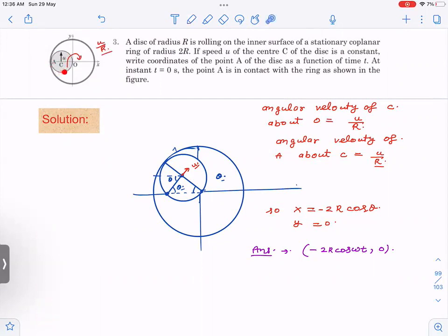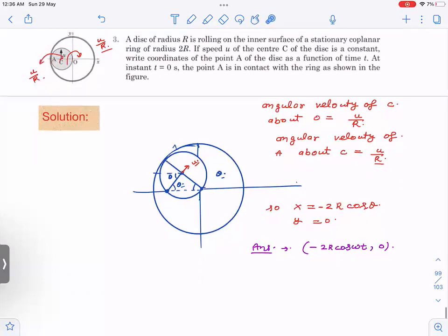Now since it is rolling on the inner surface, then if you focus on this point, the instantaneous velocity or relative velocity should be zero. So the disk will have about its center of mass one angular velocity like that also, that is also u by R. This is 2R, this is R and this is R.